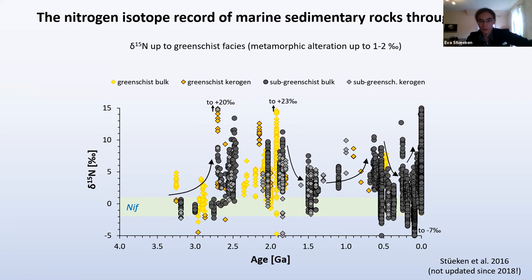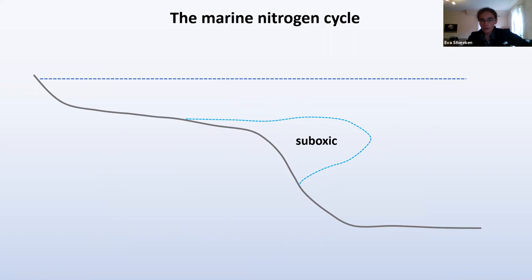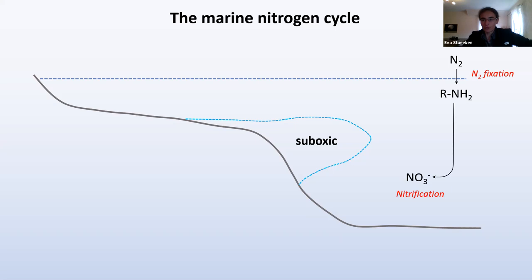How does the nitrogen cycle operate in the ocean? The first and most important reaction is nitrogen fixation — that's what brings nitrogen into the ocean and makes it bioavailable. A number of organisms can do this, largely some bacteria today. They fix nitrogen, convert it into biomass and organic nitrogen. As biomass sinks, it's nitrified to nitrate. There is a small escape route: some biomass sinks to the deep ocean, gets deposited in sediments, decomposes, and some ammonium gets picked up by clay — those would ultimately be the geological samples we analyze.